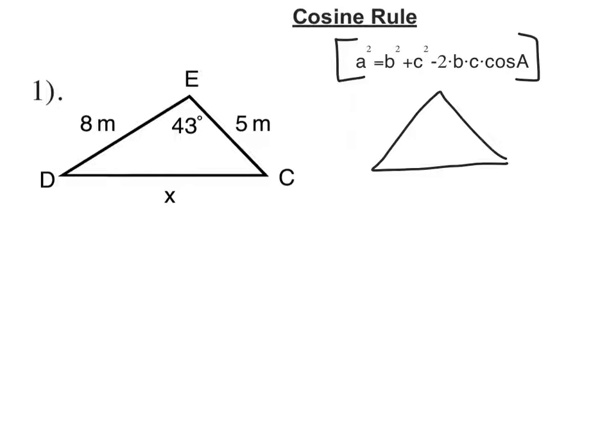What does this mean? Well, it means if I need to work out this side here, a, little a, then I need to know the two other sides plus the angle between the two other sides. And note that we call the angle big A because it's opposite little a.